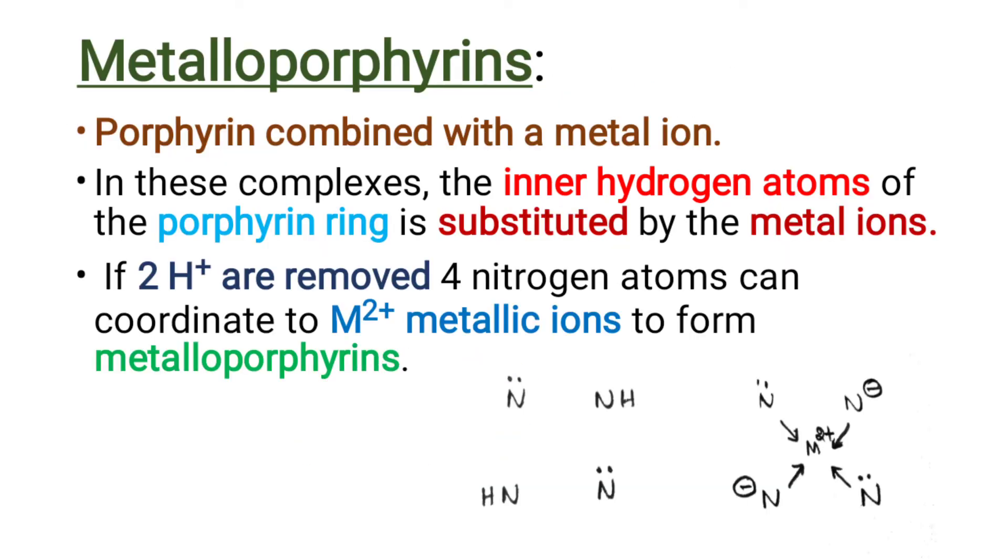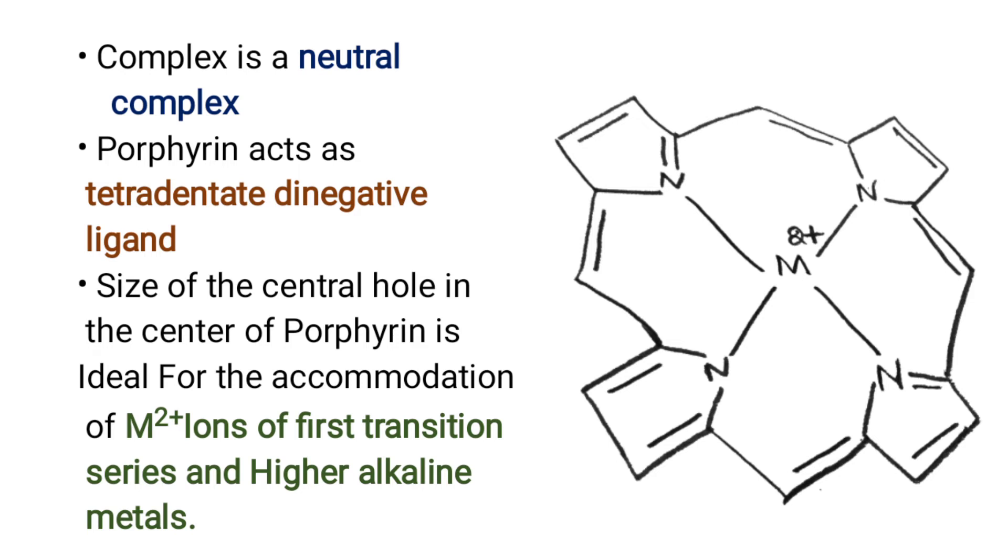Next, metalloporphyrin. Porphyrin combined with a metal ion is known as metalloporphyrin. In these complexes, the inner hydrogen atoms of the porphyrin ring are substituted by metal ions. If two hydrogen ions are removed, the four nitrogen atoms can coordinate to the M2+ metallic ion to form metalloporphyrin. This hydrogen is replaced by the metal ion. Generally, the metalloporphyrin complex is a neutral complex.